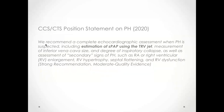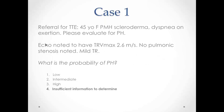The CCS position statement is similar to ESC in terms of the echo variables assessed, but instead of focusing on TRV specifically, CCS suggests looking at an estimation of systolic PA pressure. Returning to the earlier case question, the answer is insufficient information — you cannot determine probability of pulmonary hypertension based on a low TRV max alone without knowing the other echo features.